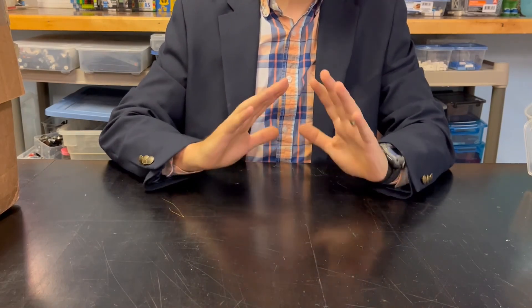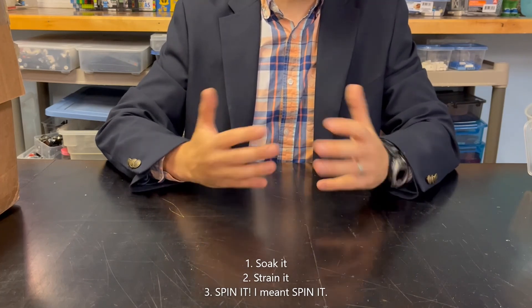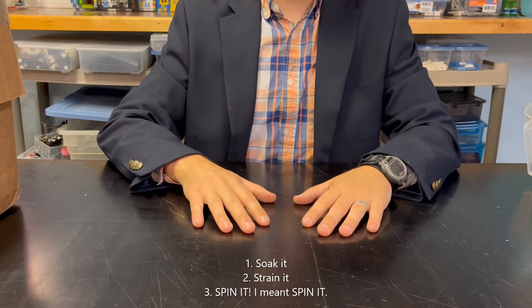So in order to do that we're going to use three steps. First we're going to soak it, then we're going to strain it, then we're going to sanitize it.